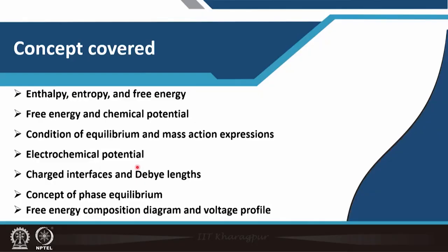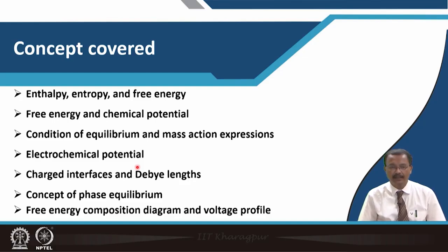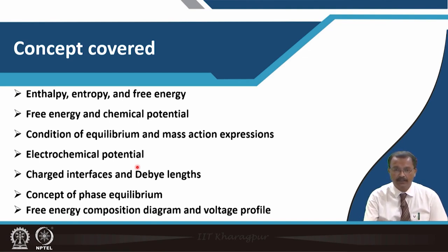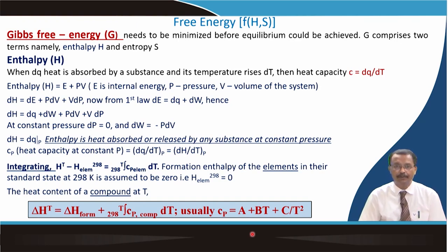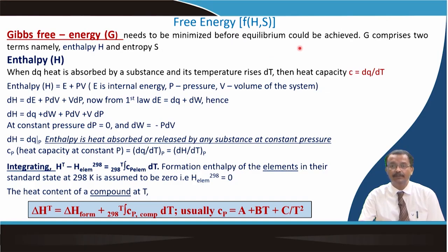I will cover the concept of phases that are in equilibrium state in an electrochemical cell. And finally, the free energy–composition diagram and how it is related to the voltage profile. Now, let us talk about the free energy, which is a function of enthalpy and entropy. The Gibbs free energy needs to be minimized before equilibrium can be achieved.